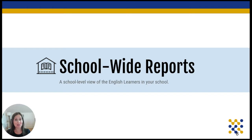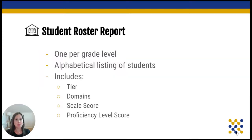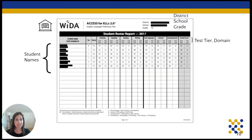Now that we know what the test is, let's talk about school-wide reports. Once you get the school-wide report, you'll see the student roster report. This contains information about a group of students within a single school and grade, and provides a concise way to look at the results of a group of students at the same time. In this example, you'll see the student names listed in alphabetical order on the left. At the top, you can see the test tier and domain for each column, and underneath each of those, you'll find the student scores in the same row as their name. There are scores for each domain of the test and scores that are combinations of those testing scores.